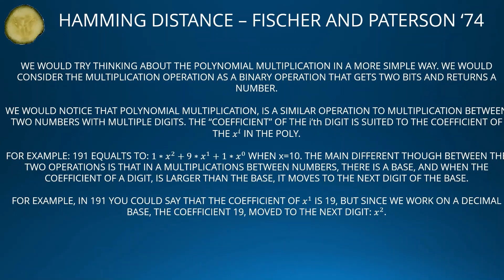Polynomial multiplication consists of many comparisons of coefficients, multiplications, and adding up results. We can think about polynomial multiplication in a simple way: consider the multiplication operation as a binary operation that takes two bits and returns a number. Polynomial multiplication is similar to multiplication between two numbers with multiple digits — the coefficient of the i-th digit corresponds to the coefficient of xⁱ in the polynomial. For example, 191 = 1·x² + 9·x¹ + 1·x⁰ when x = 10.